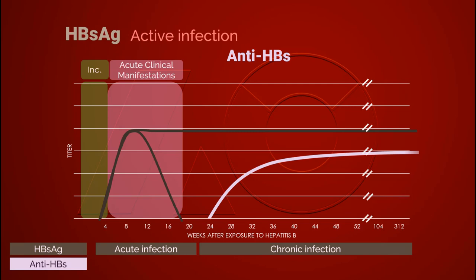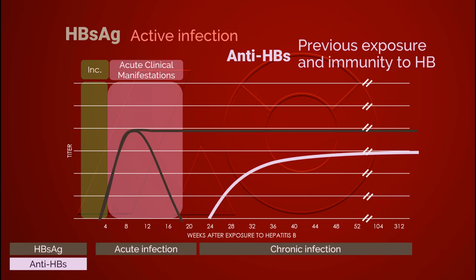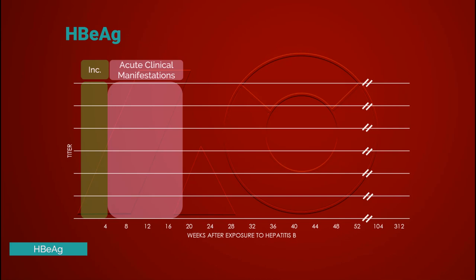Antibodies against hepatitis B surface antigen can be detected three to six months after exposure and can last for years or lifelong. The presence of hepatitis B surface antibodies indicates previous exposure and immunity to hepatitis B. The presence of hepatitis B e antigen indicates active viral replication; it is detected at the onset of infection.